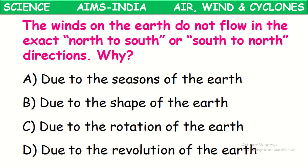The winds on the earth do not flow in the exact north-to-south or south-to-north direction. Why? The reason is due to the rotation of the earth. Because the earth is always in rotation, these winds won't be exactly in those directions — they get deviated a little.